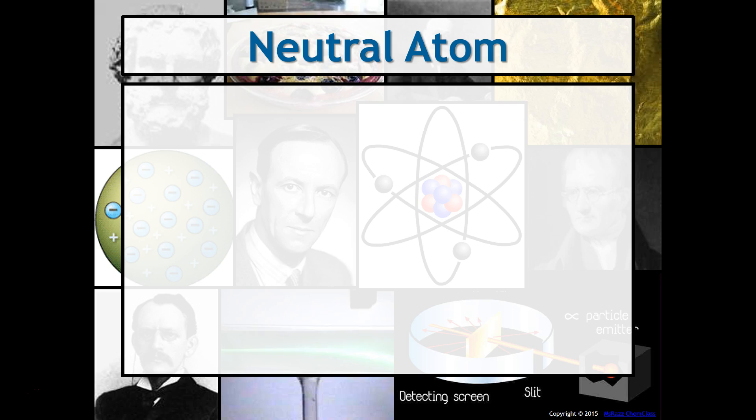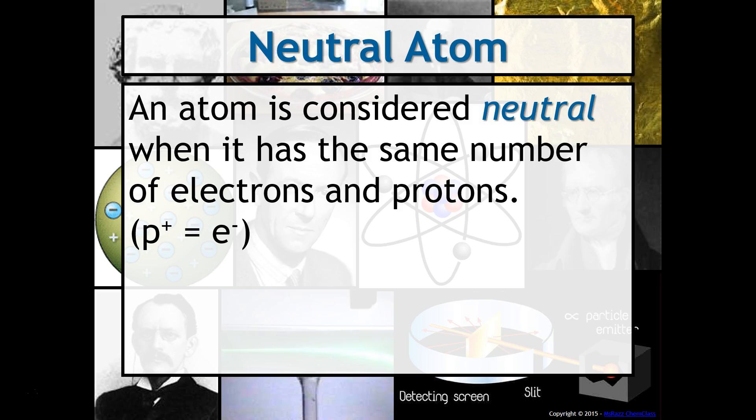Atoms are considered neutral, and so what that means is when an atom is neutral, it means that it has the same number of positive things equal to the same number of negative things. So the number of protons has to equal the number of electrons.